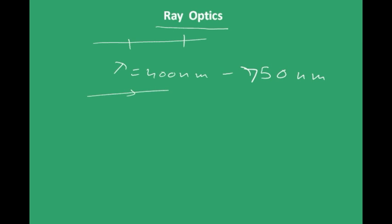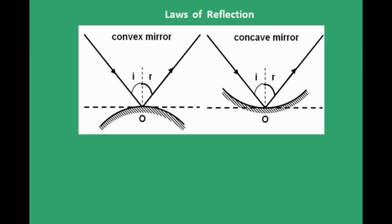Let us get introduced to some terms. Light travels in a straight line. A ray is the path of light from one point to another. A beam is just a bundle of such rays. When light encounters a reflecting surface, it reflects.